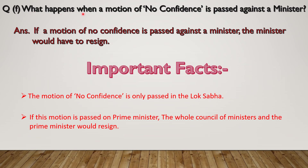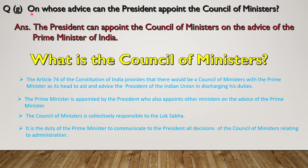Now the question is: what happens when a motion of no confidence is passed against a minister? The answer is, if a motion of no confidence is passed against a minister, the minister would have to resign. The motion of no confidence is only passed in the Lok Sabha. If this motion is passed on the Prime Minister, the whole council of ministers and Prime Minister would resign. Now the question is: on whose advice can the President appoint the council of ministers? The answer is the President can appoint the council of ministers on the advice of the Prime Minister of India.